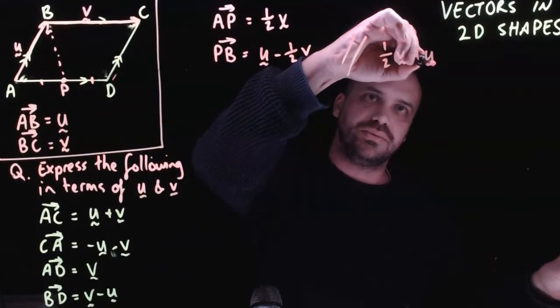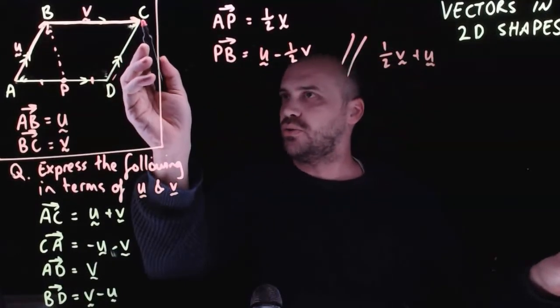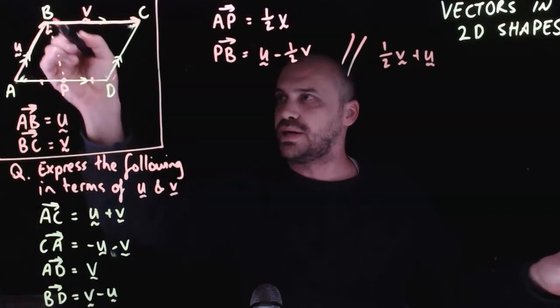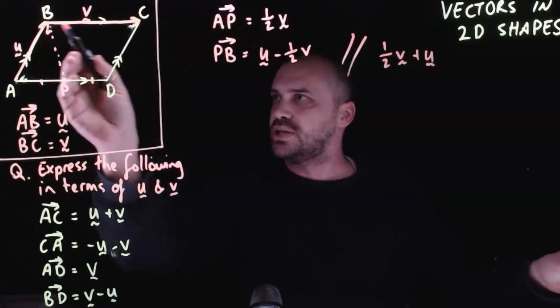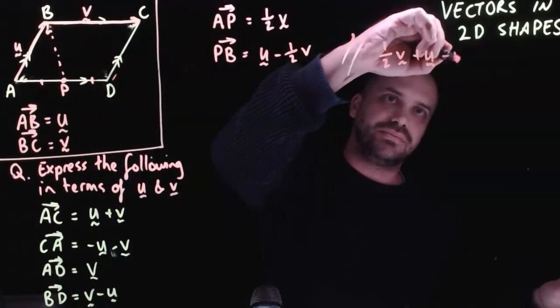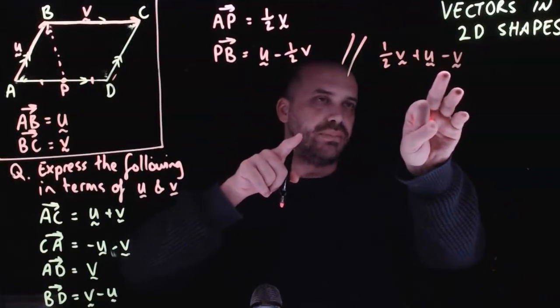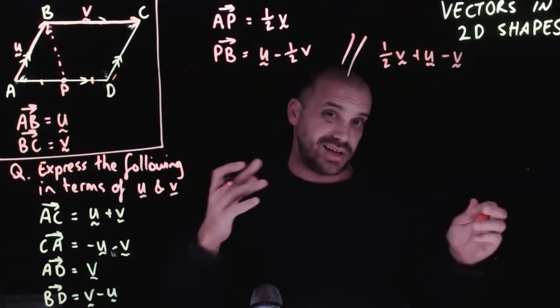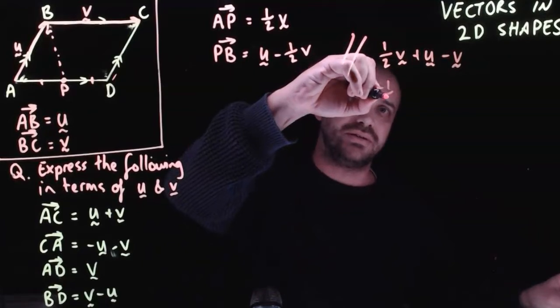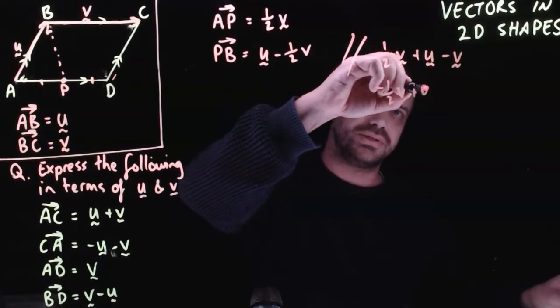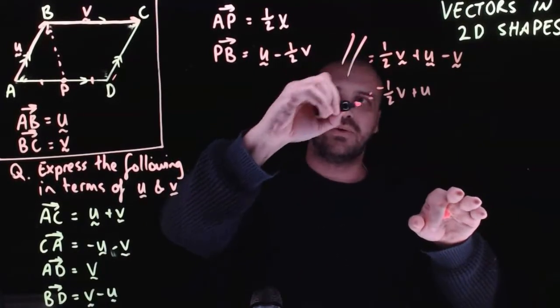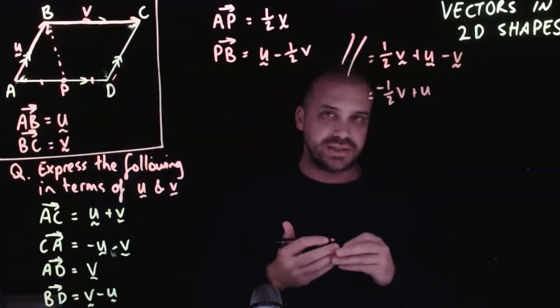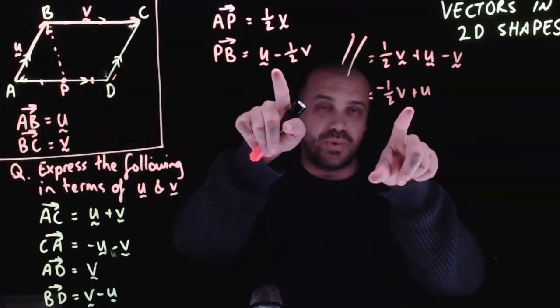D to C is vector U. And then we're going to go all the way from C to B. So we're going to take the long way from P to B. And going from C to B is negative V. Half of V minus V. Half of V minus a full V is negative half of V plus U. So you can see that whether I went the short way or the long way, that vector is still going to be expressed in the same way regardless.